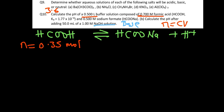And then for HCOONa, that's the number of moles for the formate. The concentration was 0.5, so 0.5 times 0.5 gives us 0.25 moles.